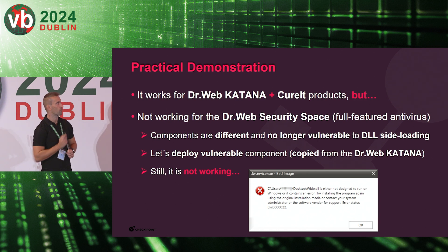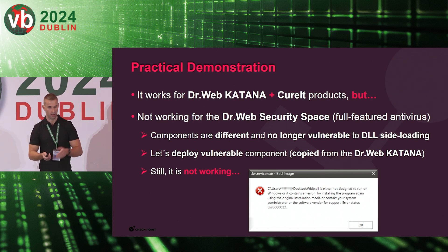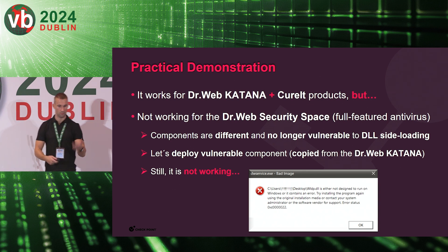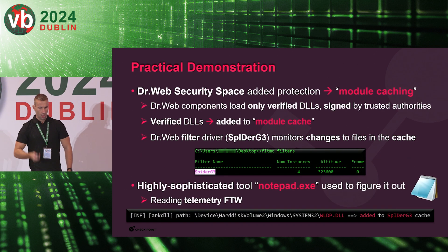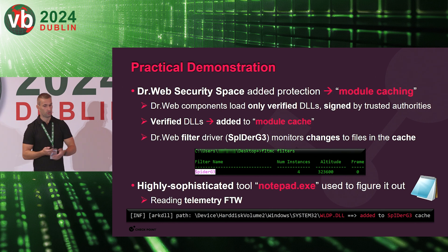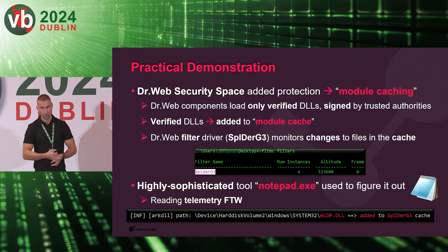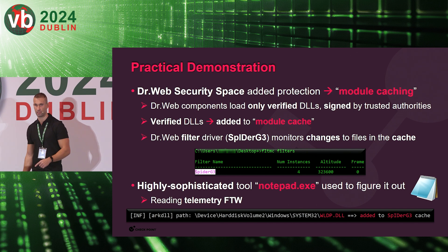This works for Dr. Web Katana and Curit, but not for Dr. Web Security Space — the full-featured main antivirus product — whose components are no longer vulnerable to DLL sideloading. So we tried deploying the vulnerable component from Katana into Dr. Web Security Space and abusing it, but it still didn't work. We got an error message that looked AI-generated. We quickly found out that Dr. Web Security Space added a protection called module caching, meaning Dr. Web components load only verified DLLs signed by trusted authorities. Once these DLLs are verified, they are added to the module cache, which is part of Dr. Web's filter driver called Spider G3. This filter driver also monitors changes to files already in the cache.